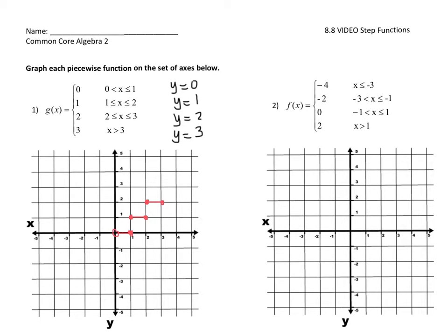And then the last one, I want the line y equals 3. For all values of x that are greater than 3, this is going to get a circle. An open circle. So open circle and all values greater.